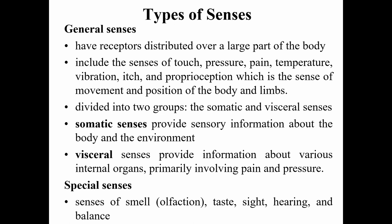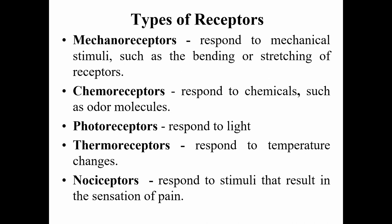We also have our special senses: smell, taste, sight, hearing, and balance. We have different types of receptors. Mechanoreceptors respond to mechanical stimuli like bending or stretching — for example, when mechanoreceptors in your stomach detect stretching of the stomach walls, they signal your brain that you are filling up. Chemoreceptors respond to chemicals, photoreceptors respond to light, thermoreceptors respond to temperature, and nociceptors respond to stimuli that result in the sensation of pain.